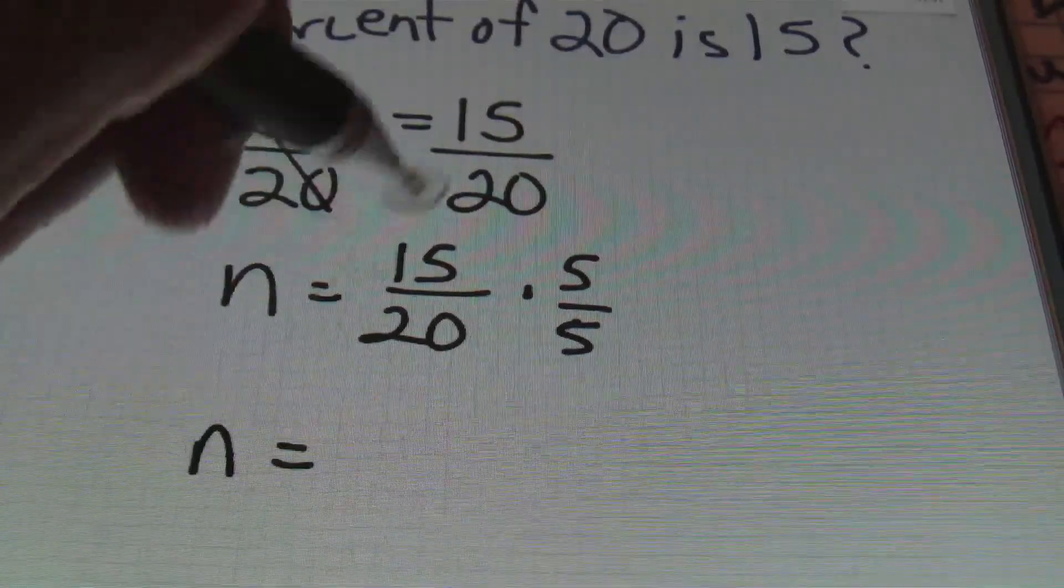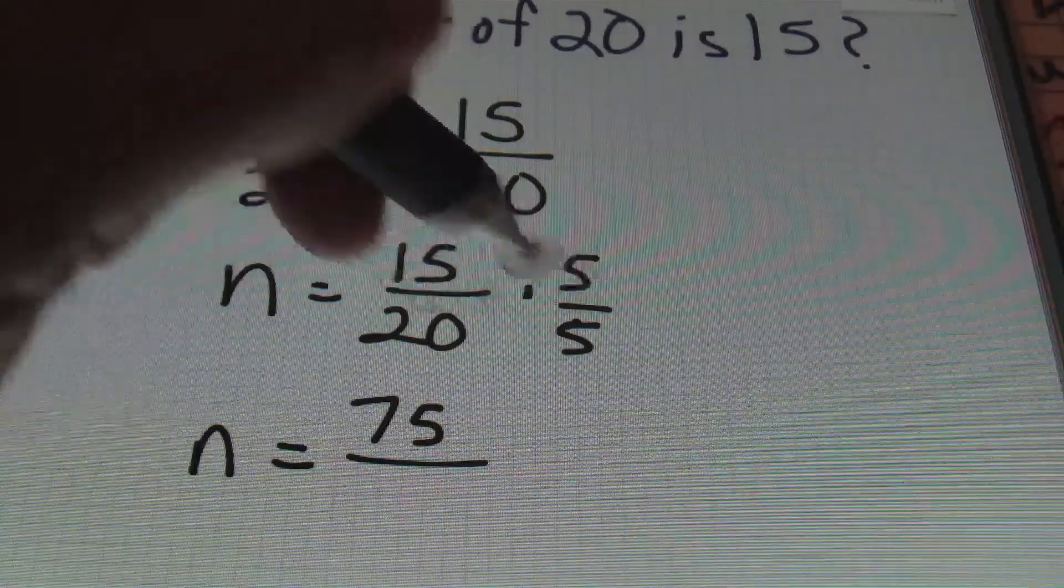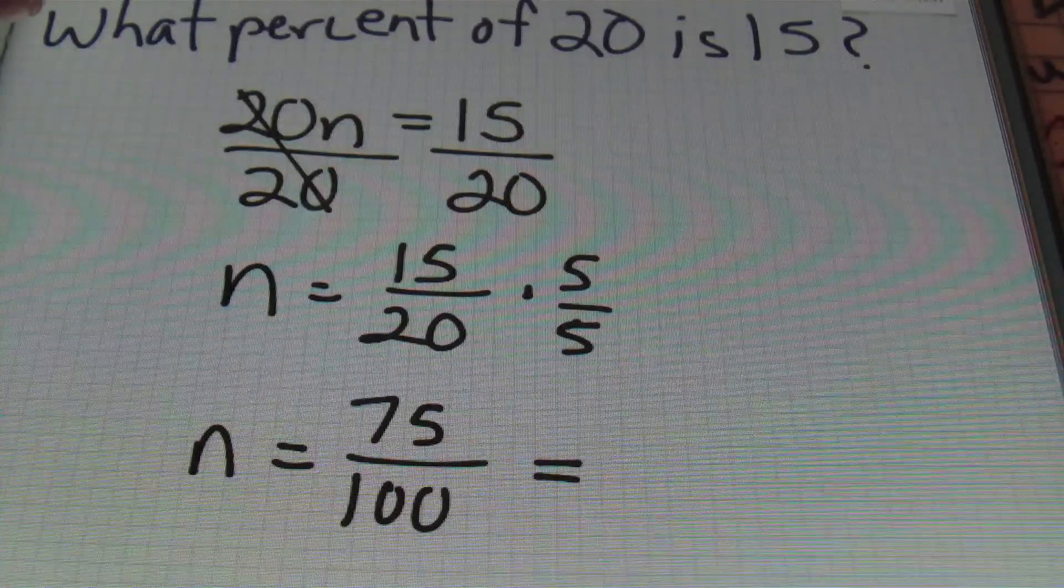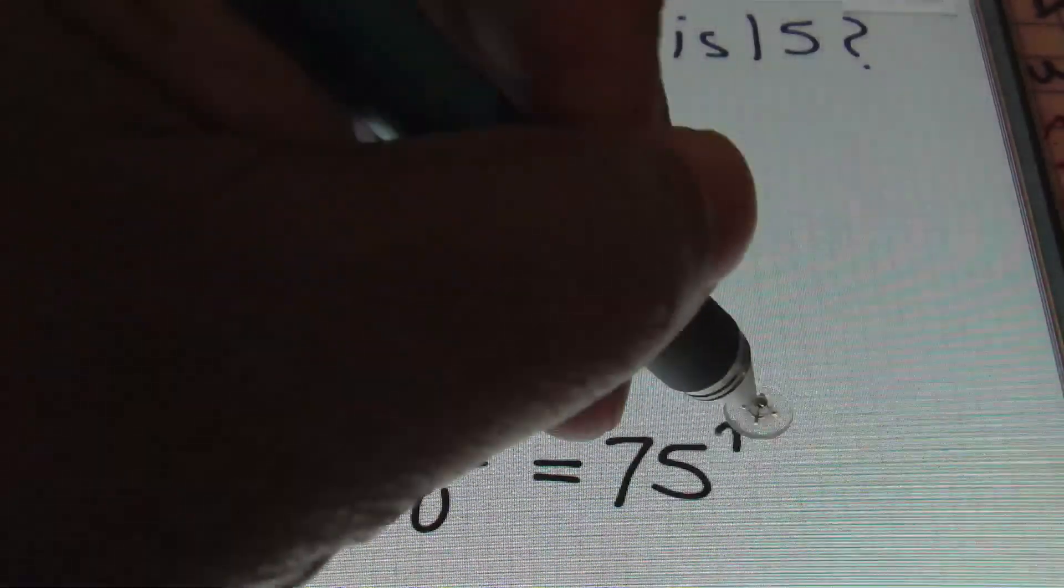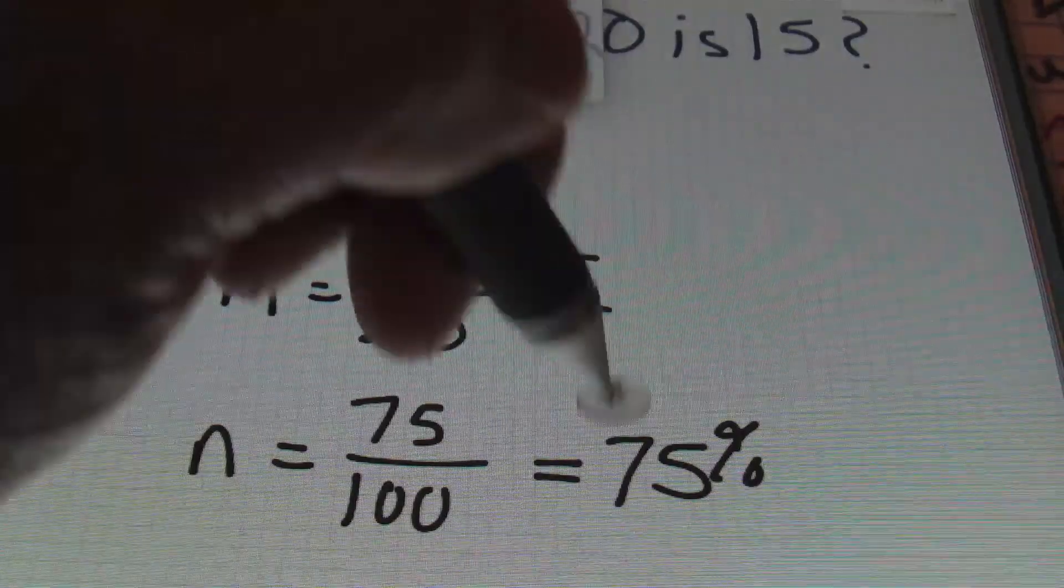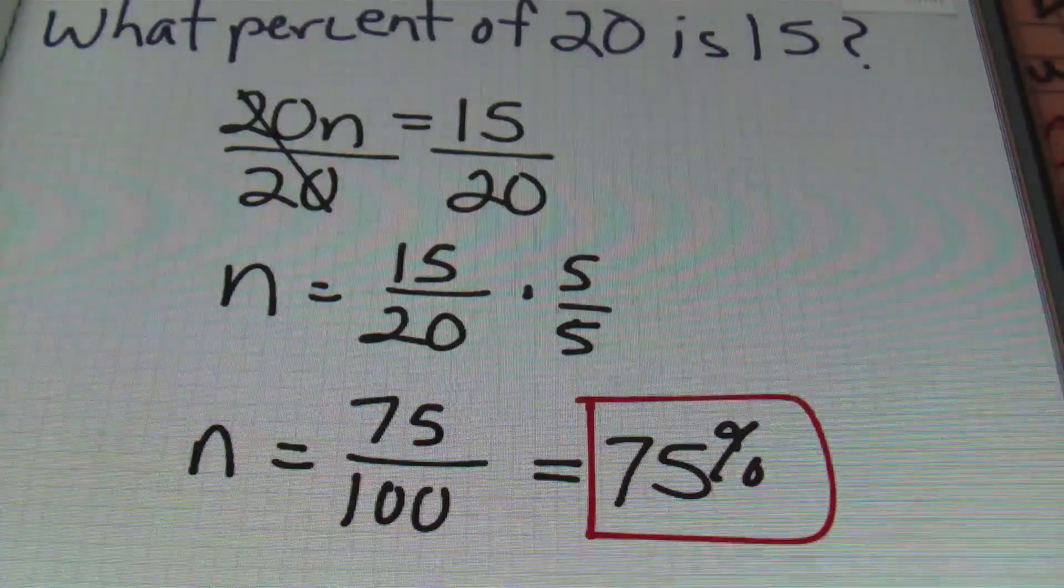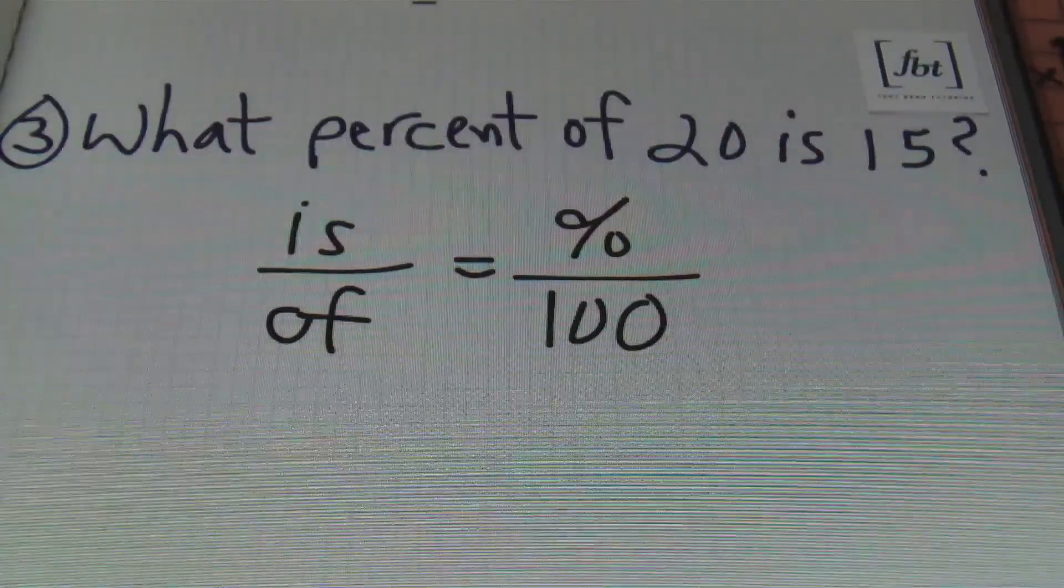You can do that by dividing and then moving the decimal two places to the right, or you can do what I'm about to do - change this denominator to 100. I can do that by multiplying the numerator and the denominator by 5. We'll have n equals 15 times 5, which is 75, and 20 times 5 is 100. And any number over 100 is a percent. So this is 75%. That's problem number three using algebraic translation.